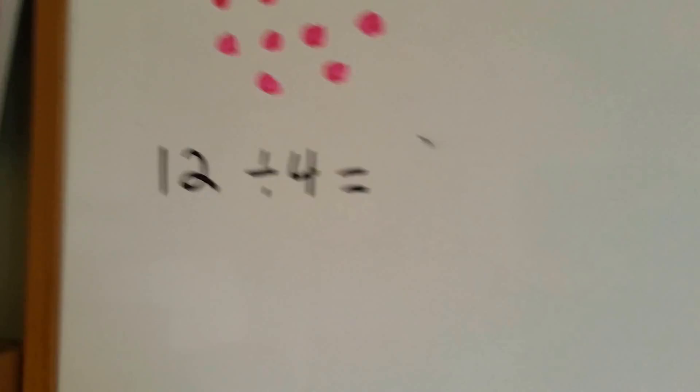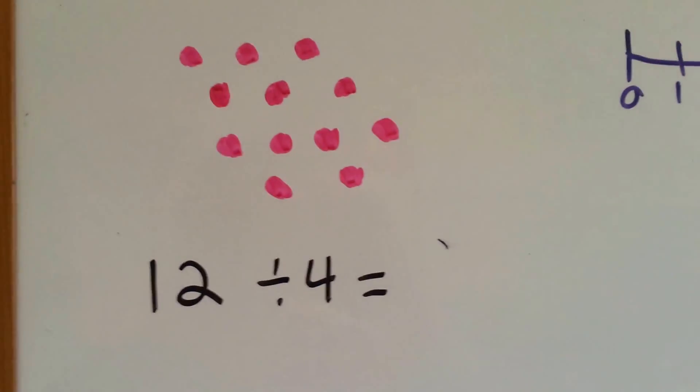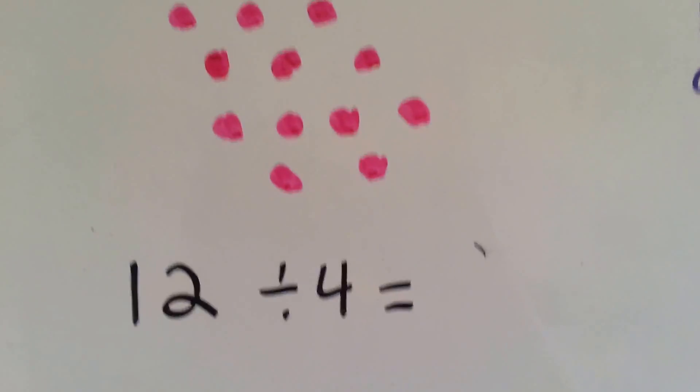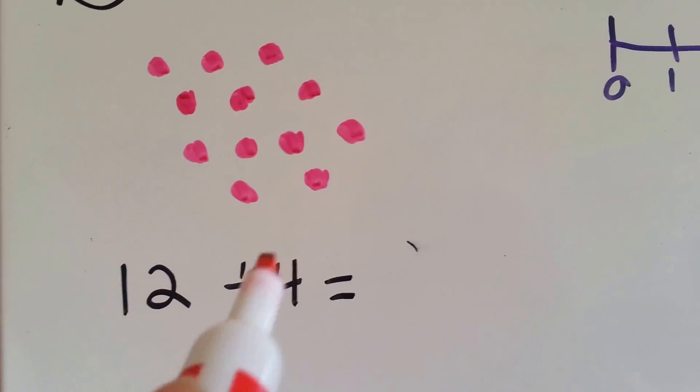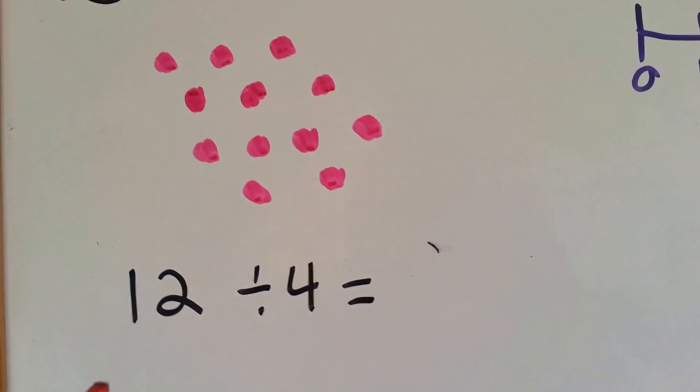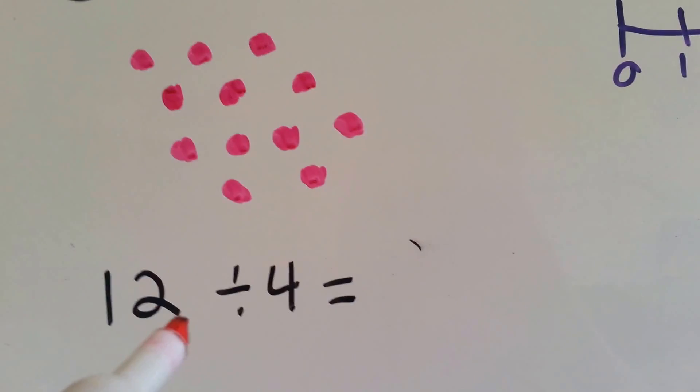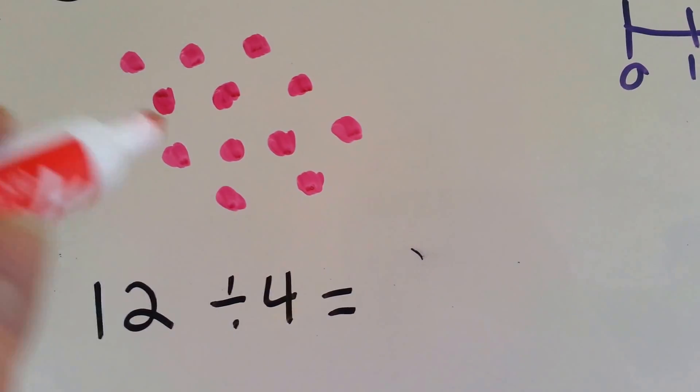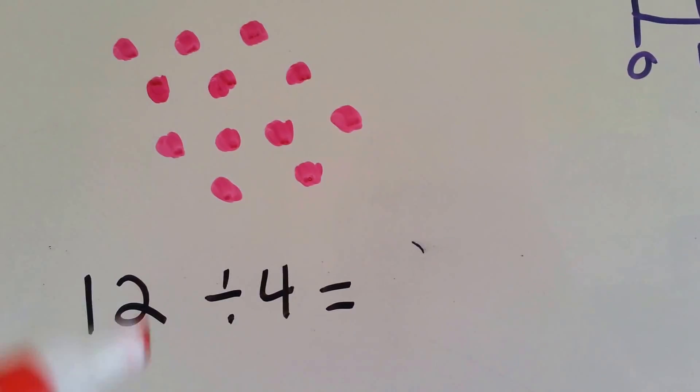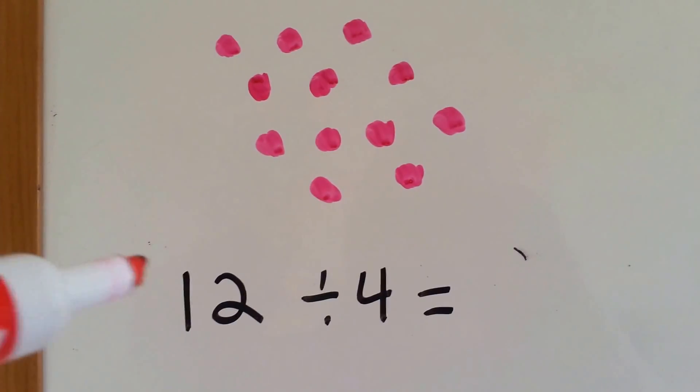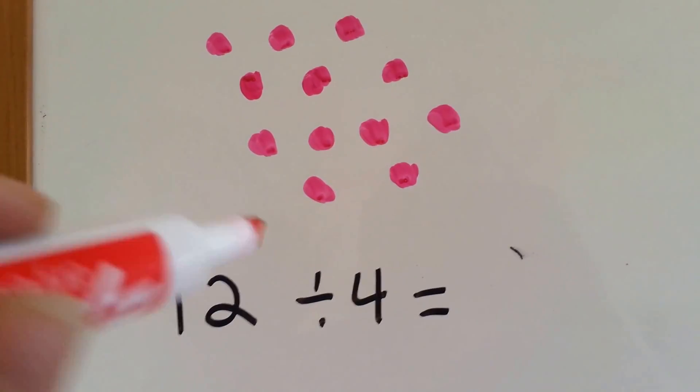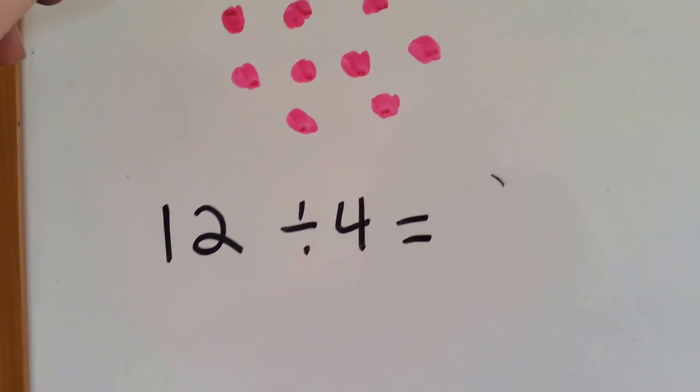So let's take a look at what we've got here. We've got these dots. We've got 12 of them and we need to divide them into 4, 4 groups. Or we need to put 4 in each group. Either way, we need to divide it up. So let's put 4 dots in each group and see what we get.